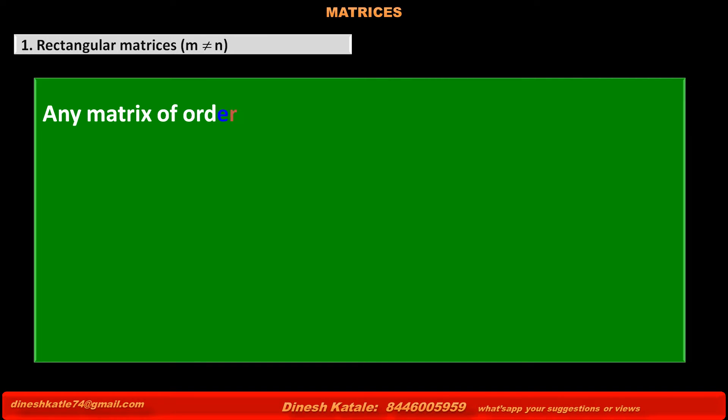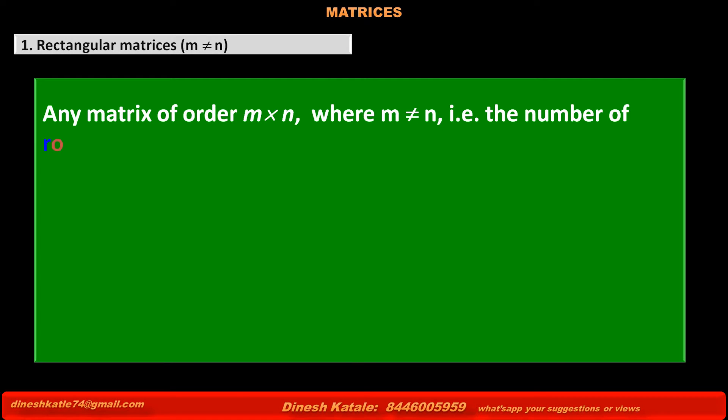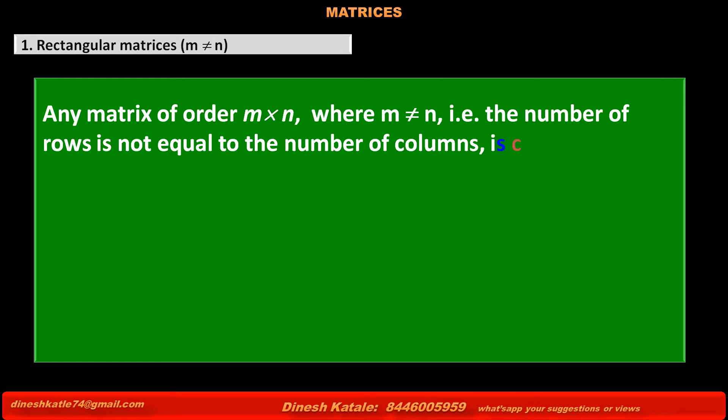First, we have to learn about rectangular matrices, which means when the number of rows M is not equal to the number of columns N. Any matrix of order M by N, where M is not equal to N — that is, the number of rows is not equal to the number of columns — is called a rectangular matrix.